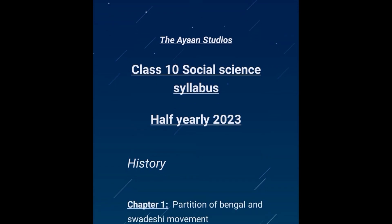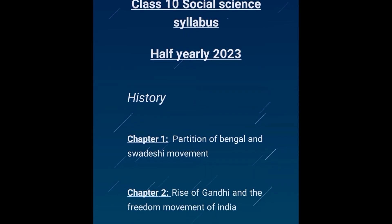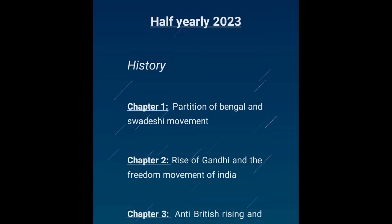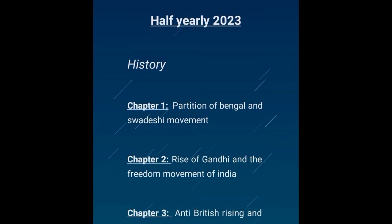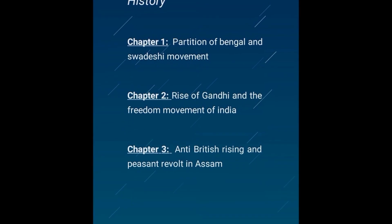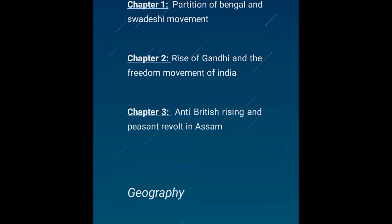The syllabus includes: 1. Partition of Bengal and Swadeshi Movement; 2. Rise of Gandhi and the Freedom Movement of India; 3. Partition of Bengal and Islam. These are the first two chapters from the beginning, and we are going to cover the last chapter as well.